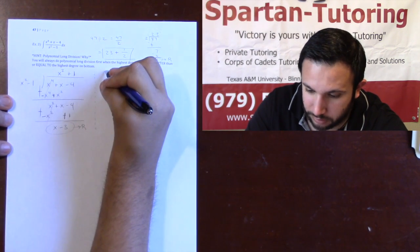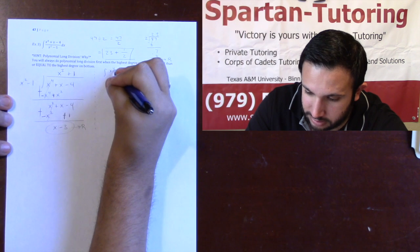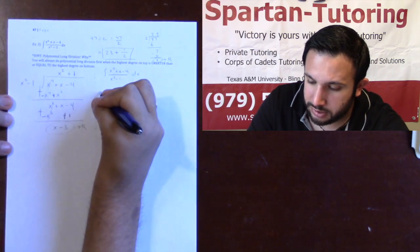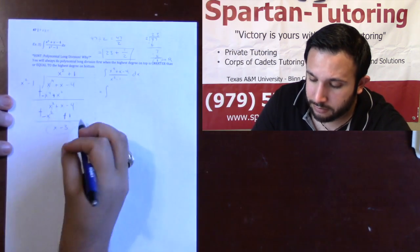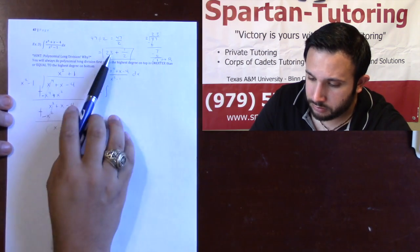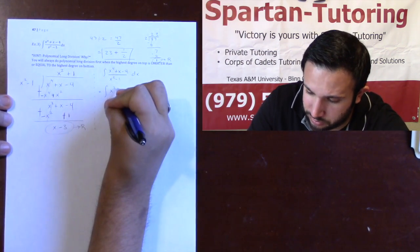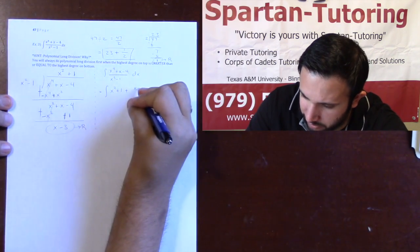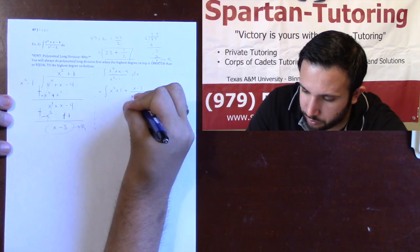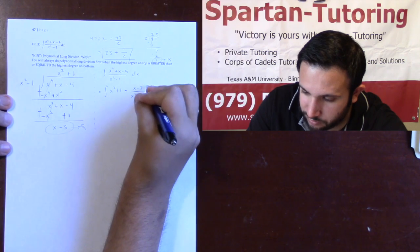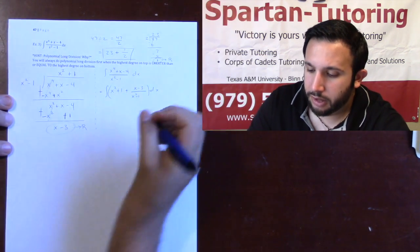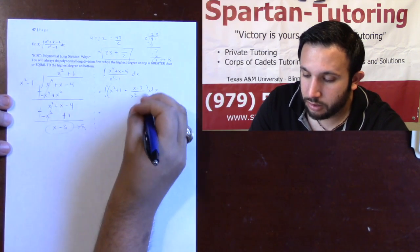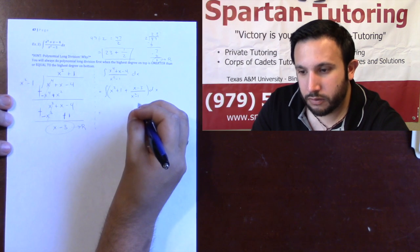And so, if I wanted to integrate x to the 4th plus x minus 4 all over x squared minus 1, which you would do, this is equal to the integral of, well, it's what was originally on top, so it said x squared plus 1, plus my remainder, my remainder x minus 3 over what was originally on bottom, which is x squared minus 1. Now, notice the integral of x squared plus 1, man, we got that. That's not too bad. But, in order to do this integral, we had to do partial fractions.